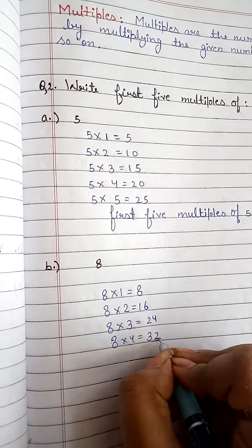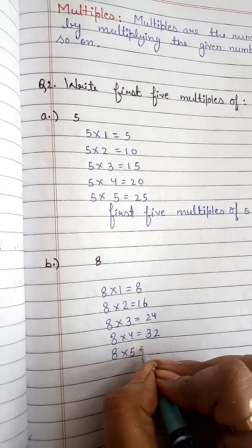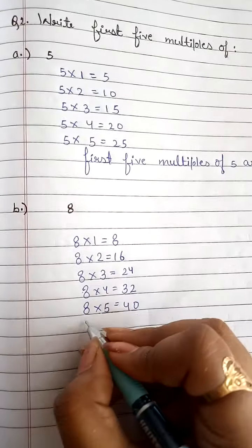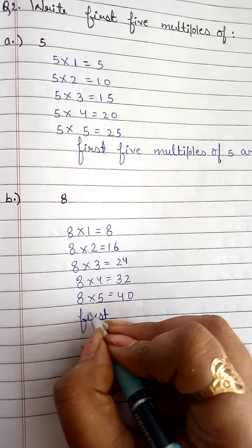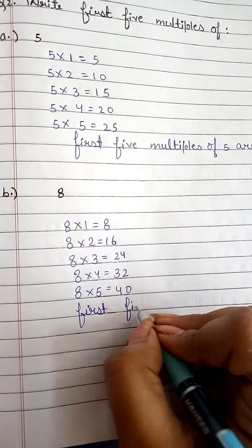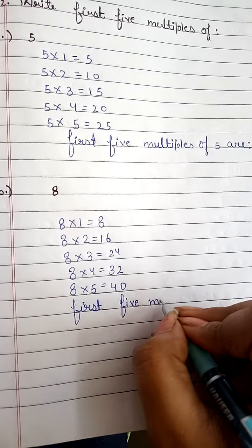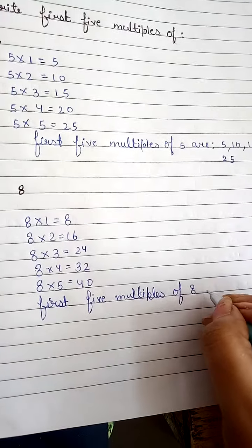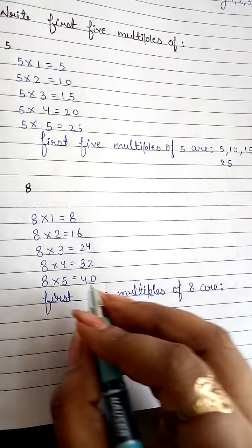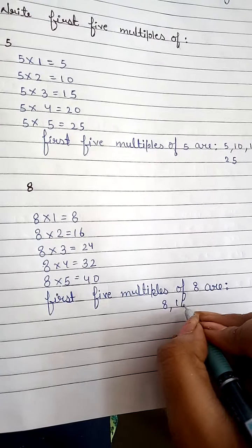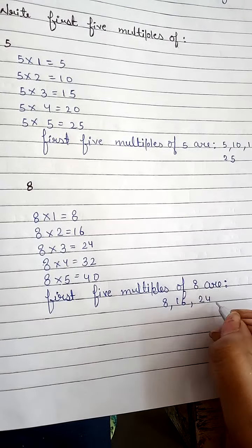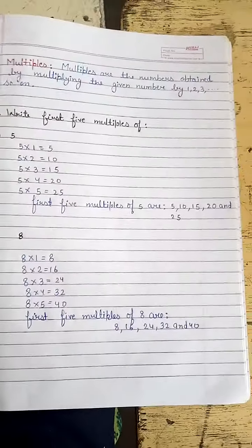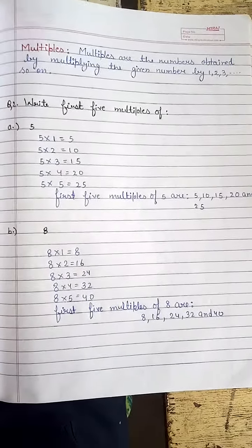Eight multiplied by five is forty. So the first five multiples of eight are: eight, sixteen, twenty-four, thirty-two, and forty. Easy, isn't it? We just have to multiply the number by counting numbers.